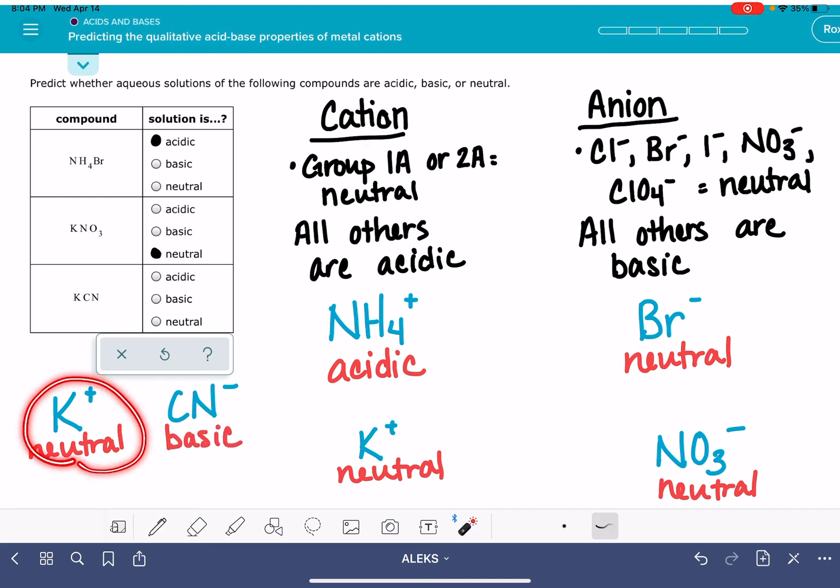We have a neutral cation with a basic anion. The basic anion is going to take over. The solution as a whole is going to be basic.